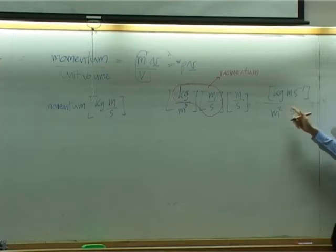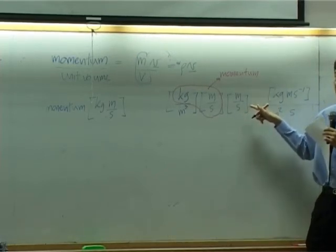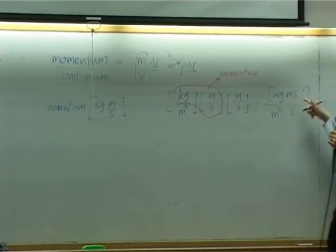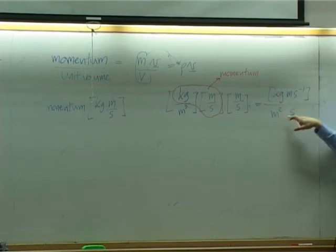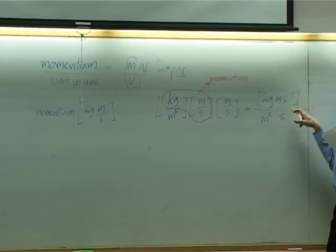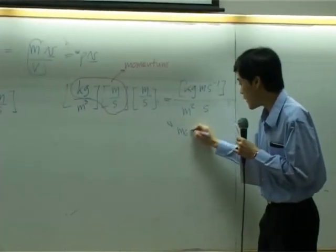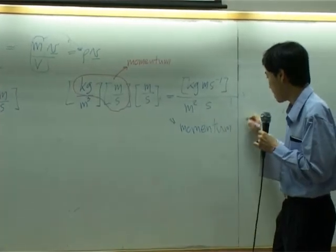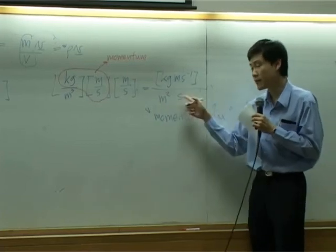And if you look into meter per second, meter per second is velocity. And in this part, kilogram per meter per second is momentum. This is momentum per unit area per time. What is unit of the whole variable here? Flux. So this is momentum flux. This is momentum flux, the unit of momentum flux.